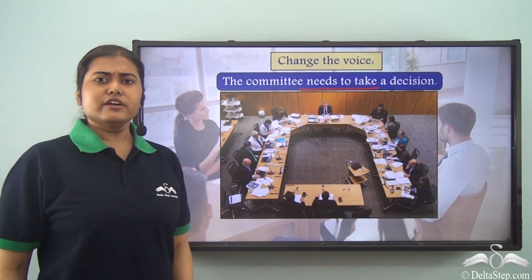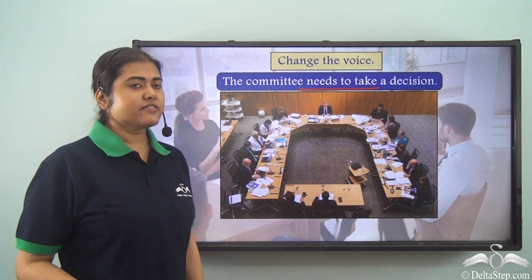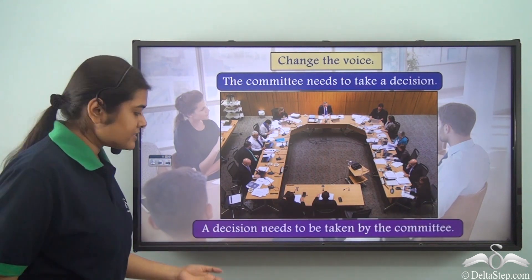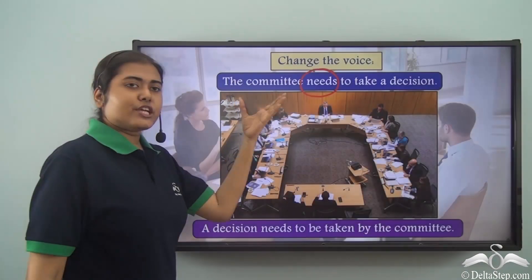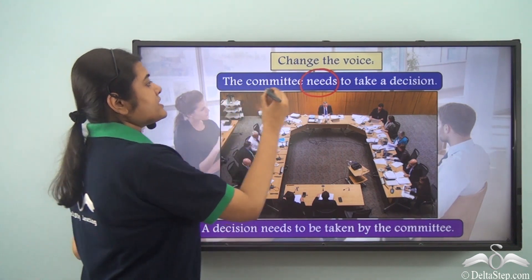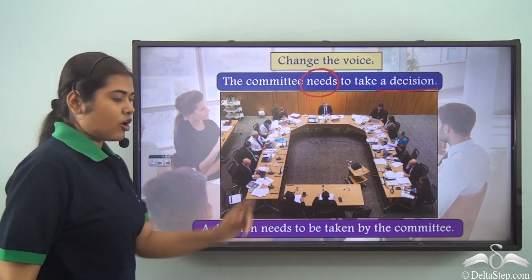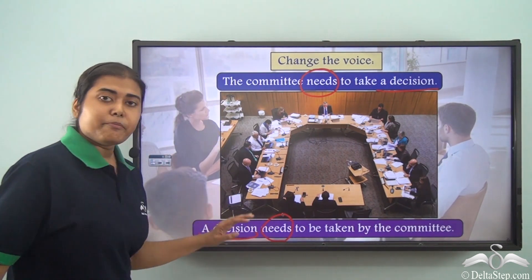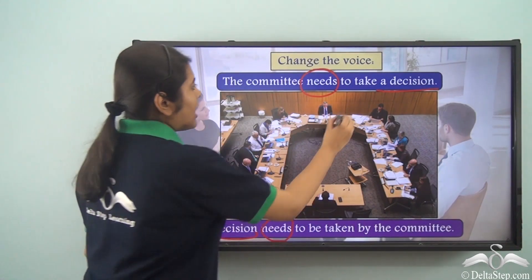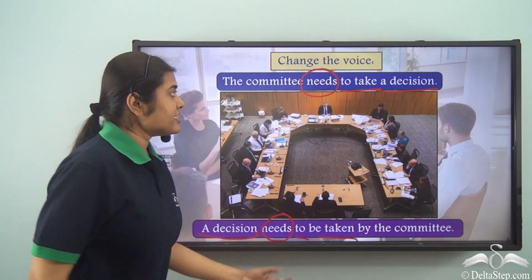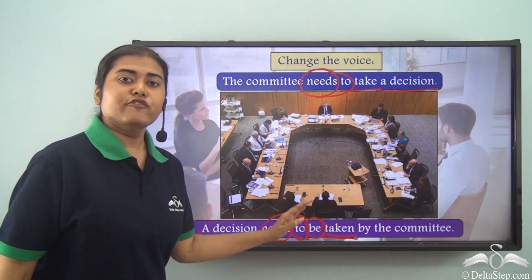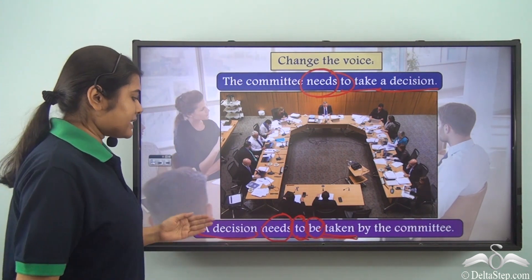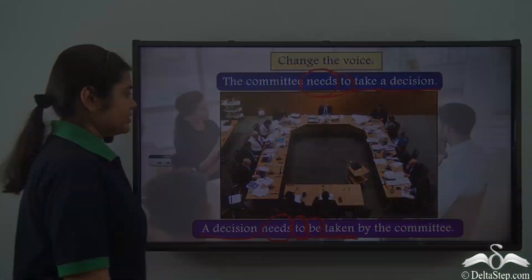'The committee needs to take a decision.' Here the verb is 'needs to take' — there is no be verb at all, so this sentence is in the active voice. To change it to passive voice we write: 'A decision needs to be taken by the committee.' The object 'a decision' comes to the subject position, 'needs' remains the same, and 'to take' becomes 'to be taken' — we keep 'to', add the be verb, then the past participle form 'taken', followed by the doer 'by the committee'.